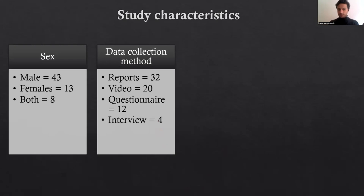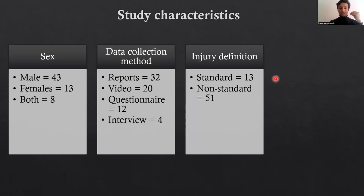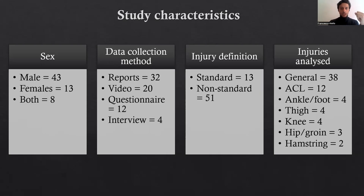With reference to injury definition, only 13 studies out of 64 used a standard case definition. The vast majority of studies reported injuries in general without specifying body location, while others reported specific body locations where injuries occurred, which allowed analysis by body location. Data were not meta-analysed because of these issues, and were reported only descriptively.